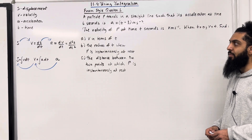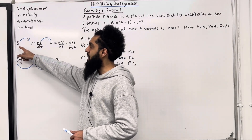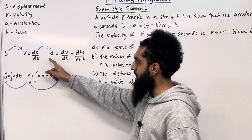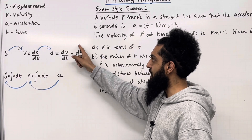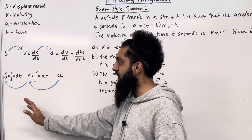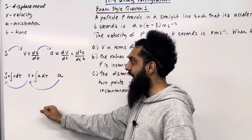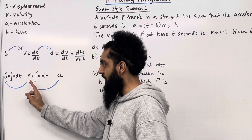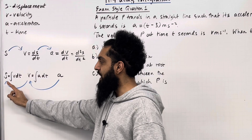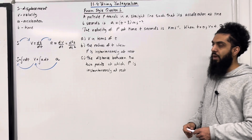S is displacement, V is velocity, A is acceleration, and T is time. Given the displacement S, which is a function in terms of time T, the velocity is given by dS/dt, and the acceleration is given by dV/dt, alternatively d²S/dt². If you are given the acceleration and want to work out the velocity, we integrate the acceleration — the velocity is the area under the acceleration curve and the horizontal axis. Given the velocity, you can work out the displacement by integrating the velocity — the displacement is the area under the velocity curve and the horizontal axis.